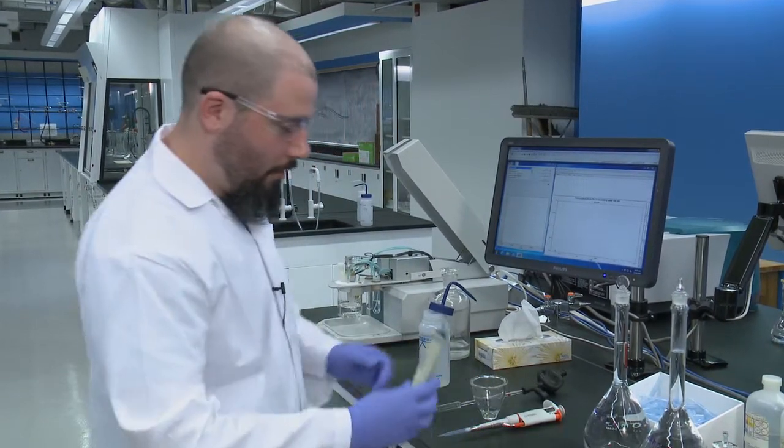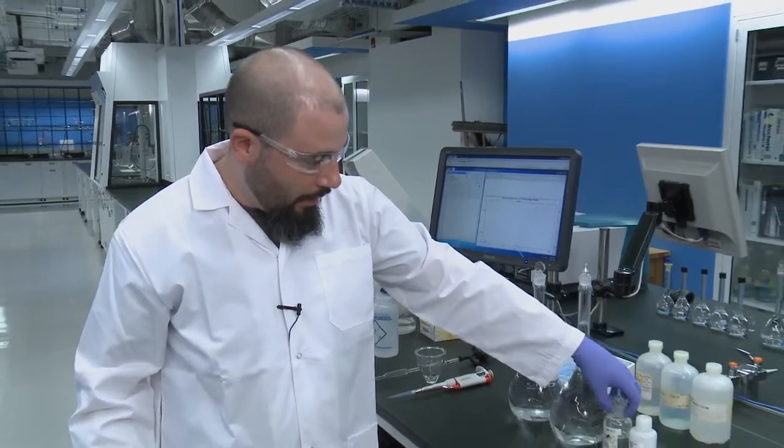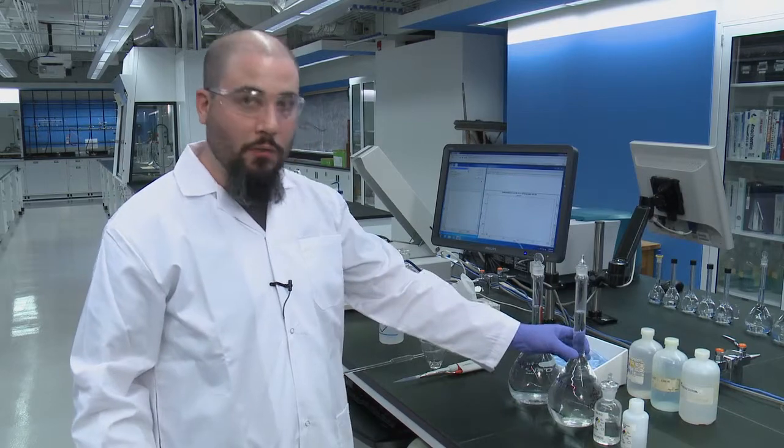Then using your automatic pipettes, you'll want to add your 1 molar acetate buffer, 3 molar potassium chloride, and your unknown to the cell.